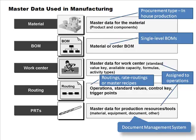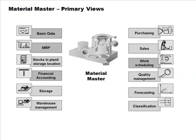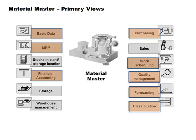Master data for PRTs could include material, equipment, document, or other types. Document refers back to the document management system. So PRTs are just the tools used in production. These are all the master data that manufacturing execution uses. The material master primary views we've seen many times — the specific views maintained for manufacturing are MRP and work scheduling. Many other views are obviously impacted as manufacturing takes place.